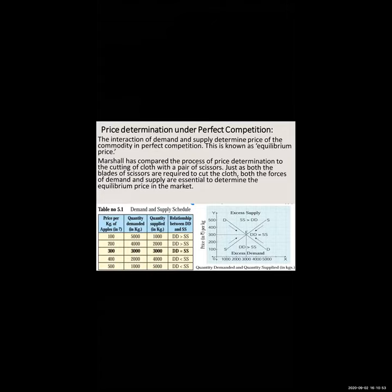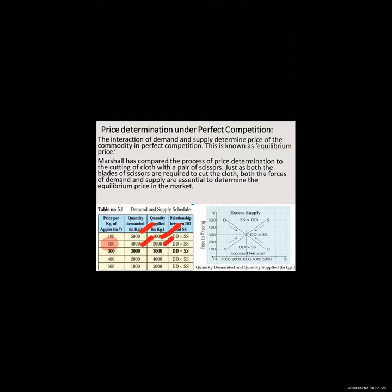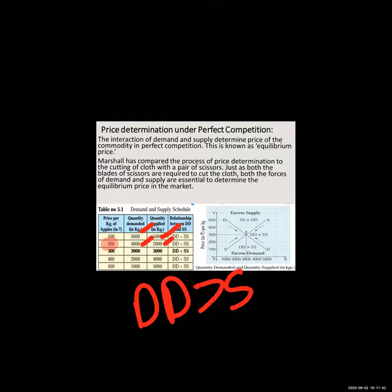In this table also, you can notice: as price goes on increasing, quantity demanded goes on decreasing and quantity supplied increases. At 100 rupees, quantity demanded was 5,000 kg and quantity supplied was 1,000 kg — demand is more than supply. At 200 rupees, when price increased from 100 to 200, quantity demanded fell from 5,000 to 4,000 and quantity supplied increased from 1,000 to 2,000 kg. At this stage, demand is still more than quantity supplied.